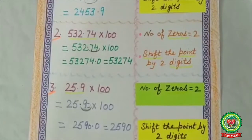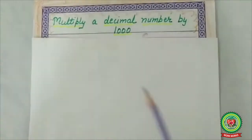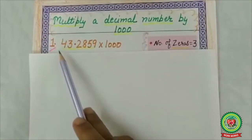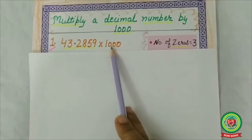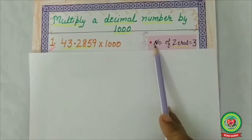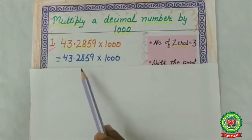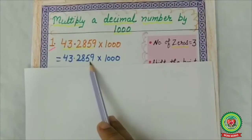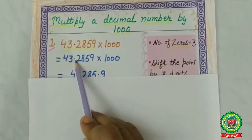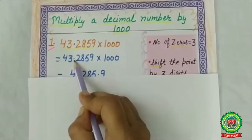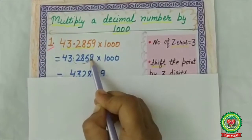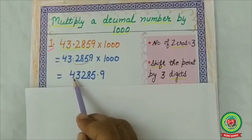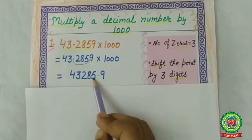Now we will learn to multiply a decimal number by 1000. First example: 43.2859 multiplied by 1000. How many zeros? 3. So number of zeros is 3. Step 2: shift the point by 3 places. The point is currently between 3 and 2. Shifting 3 digits — 1, 2, 3 — the point comes between 5 and 9. The answer is 43285.9.